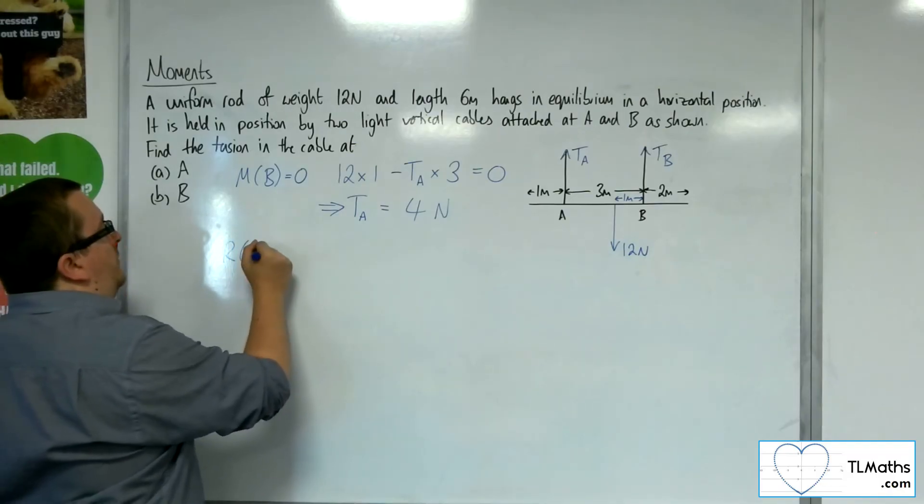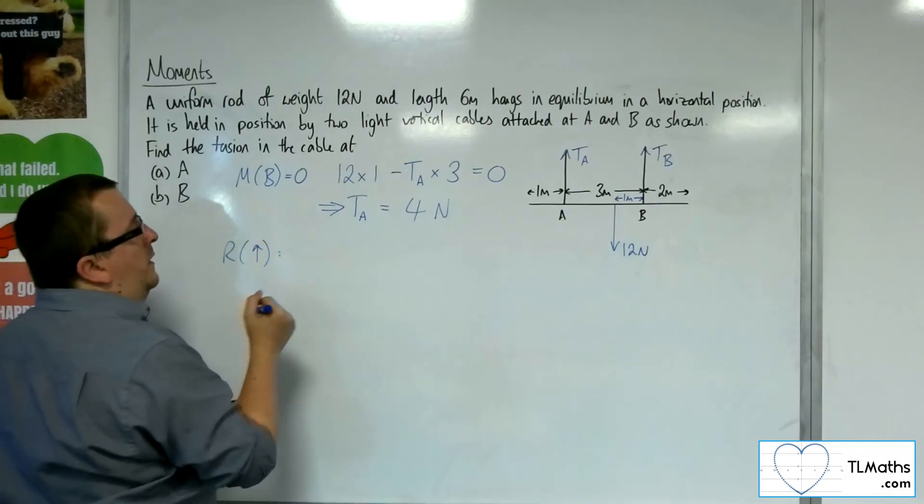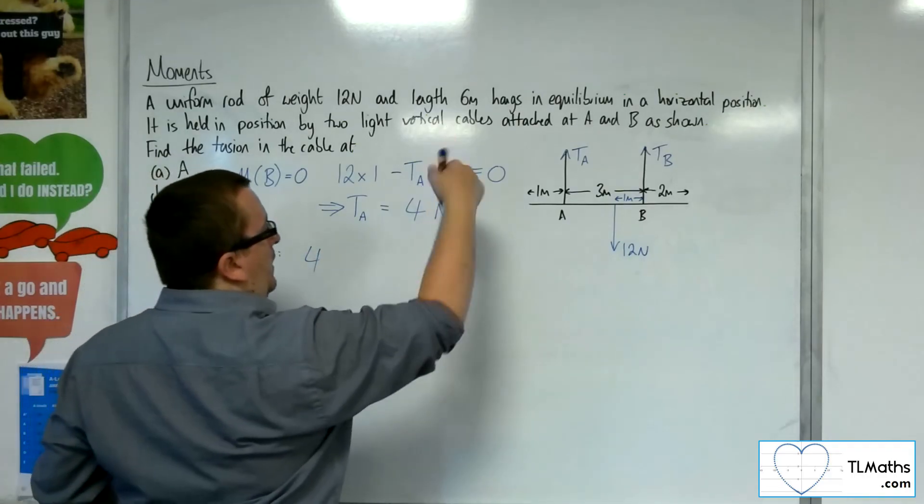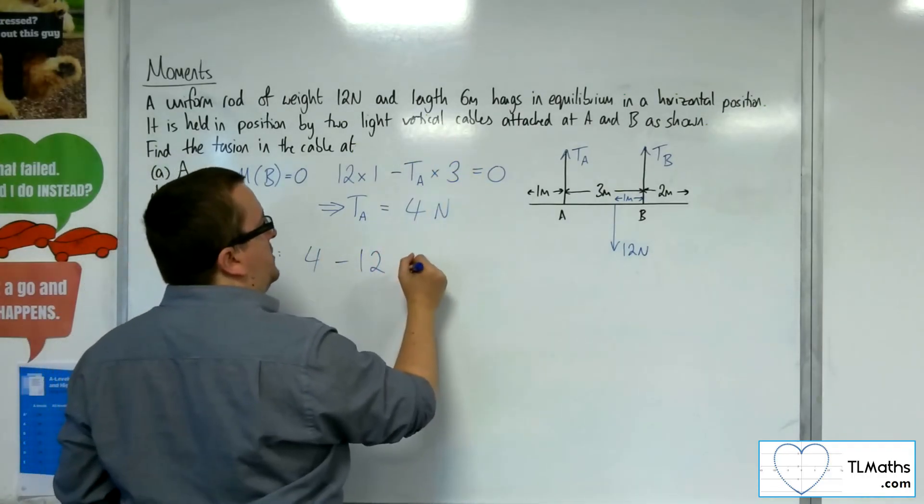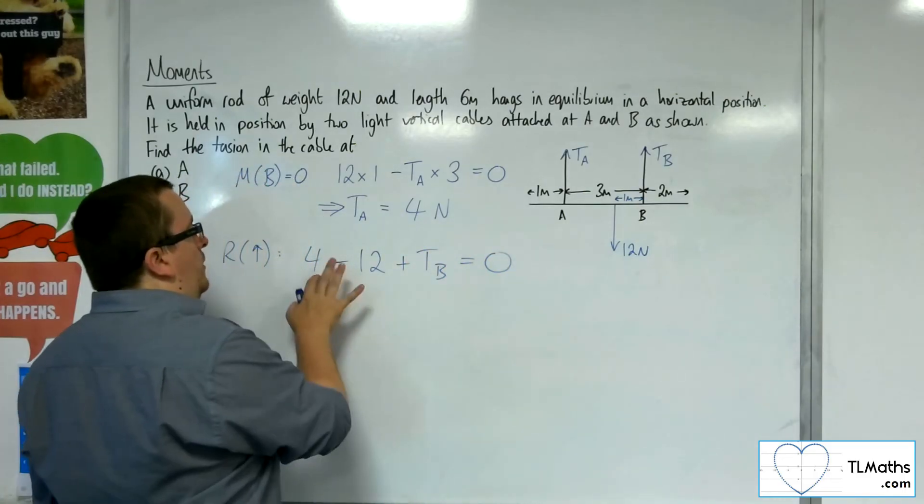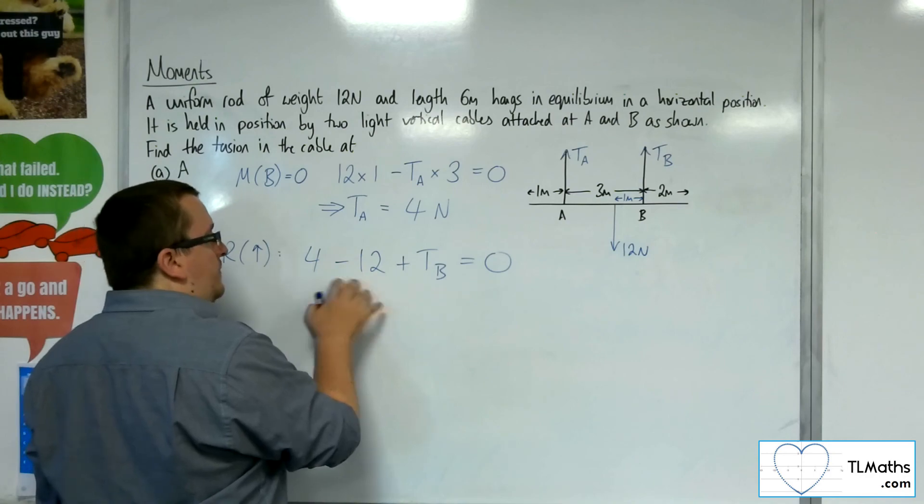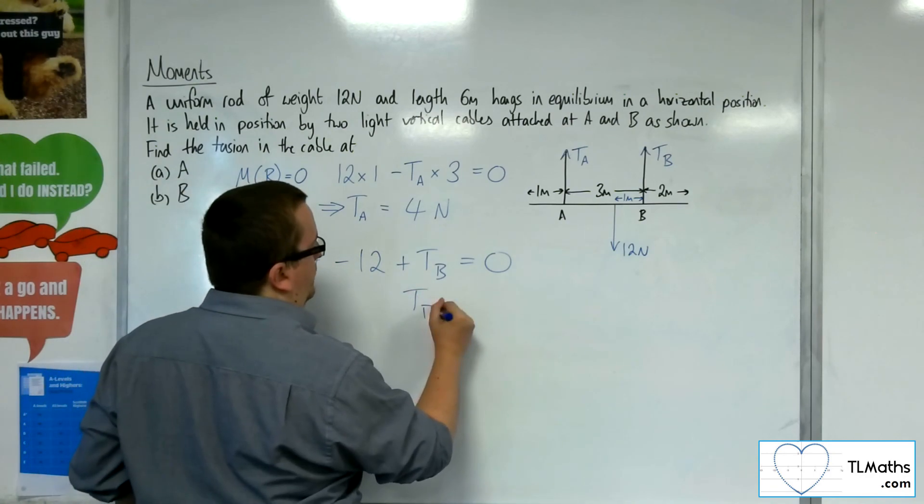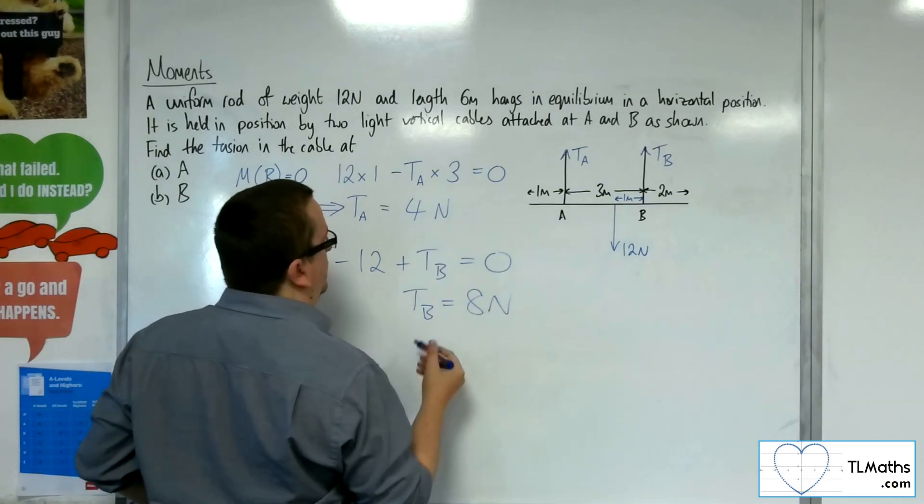So if I resolve taking upwards as positive, I've got T_A, which is the 4 newtons. I've got 12 newtons working against us. I've got T_B working upwards, and that's got to be equal to 0. 4 take 12 is minus 8. Add 8 to both sides. And so T_B is 8 newtons.